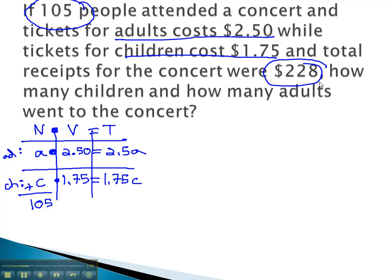The other total we're given is 228. This is a total amount of money. This is a total when we add the adults and the children's money together, we get 228 dollars brought in for the concert.